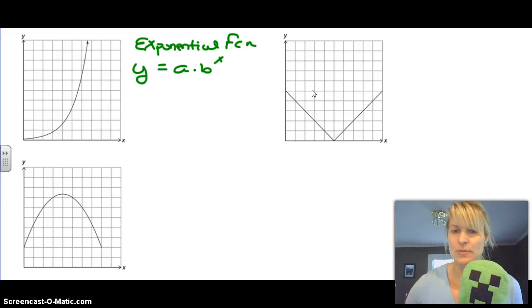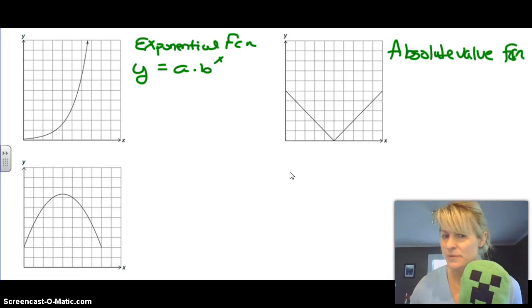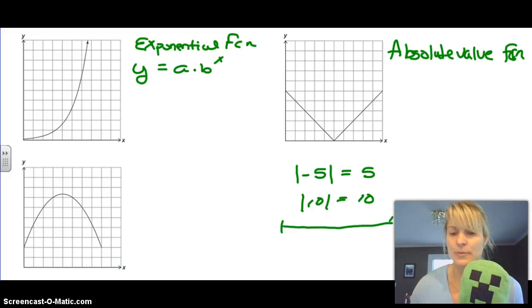This one we talked about briefly - this one's called an absolute value function. A little side note: if you remember what absolute value is, if you have like negative 5, the absolute value is 5. If you had the absolute value of 10, the answer would be 10. So it's the positive of whatever's in there.